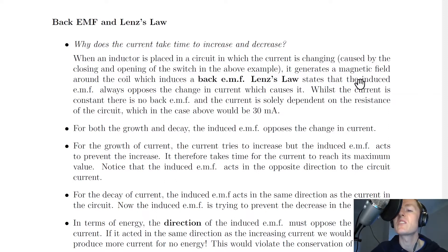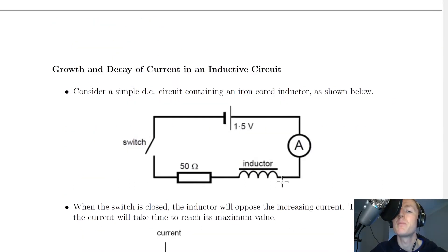Lenz's Law states that the induced EMF always opposes the change in current which causes it. So by induced, we mean something that has been caused to happen. So this EMF has been produced due to the change in current by opening or closing the switch. So whilst the current is constant, there is no back EMF, and the current is solely dependent on the resistance of the circuit, which in the case above would be 30 milliamps, based on a 50 ohm resistor and a 1.5 volt battery.